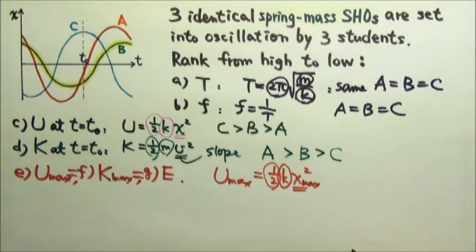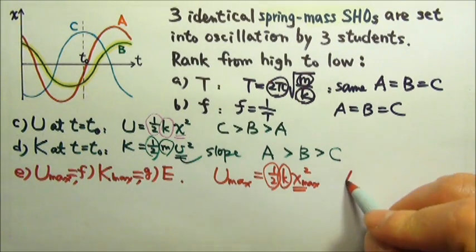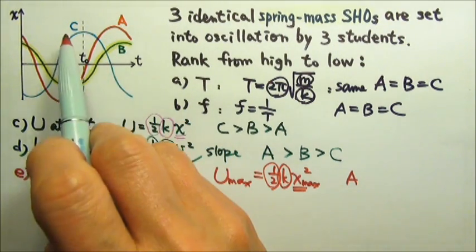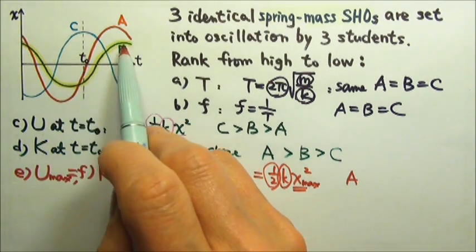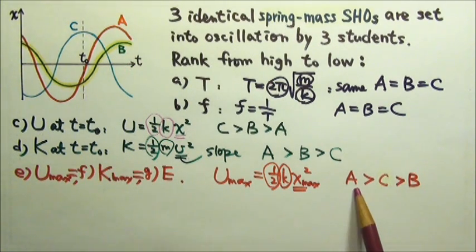So which oscillator has the largest amplitude? It's A. And then it's C and then B. So it is ACB.